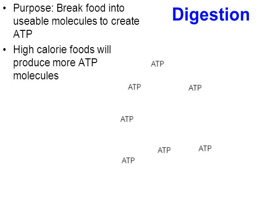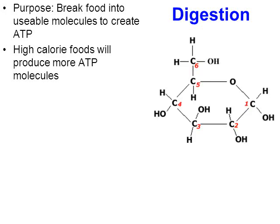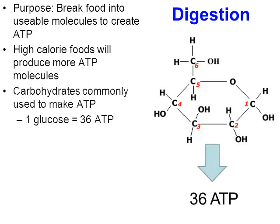Higher calorie foods will produce more ATP molecules because they have more glucose in them — the more glucose there is, the more ATP will be created. Here's a diagram of glucose: one molecule of glucose, through a process called cellular respiration that we'll learn about later in this chapter, will be used to make up to 36 ATP molecules.